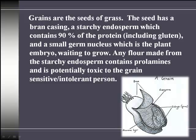Grain is actually the seed of grass — as grass grows, it harbors a seed, and that seed is what we consider to be a grain. An important layer called the endosperm is where the bulk of the gluten is found. When we crush, grind, or mill a grain, we use this endosperm layer to make flour. Anyone who is grain intolerant or sensitive is going to potentially react to those prolamines in the endosperm.